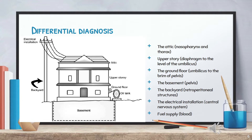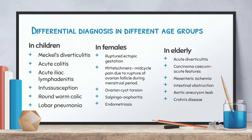Differential diagnosis by age group: In children — Meckel's diverticulitis, acute colitis, acute iliac lymphadenitis, intussusception, roundworm colic, and lobar pneumonia. In females — ruptured ectopic pregnancy, mittelschmerz, ovarian cyst torsion, salpingo-oophoritis, and endometriosis. In adults — acute diverticulitis, carcinoma of cecum, mesenteric ischemia, intestinal obstruction, aortic aneurysm leak, and Crohn's disease.